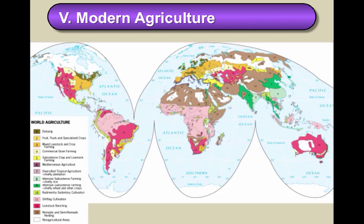There are two things that must be considered when analyzing modern agricultural production. One is climate, and the second is the Food Network itself — the linkages between the production areas and the consumption areas.